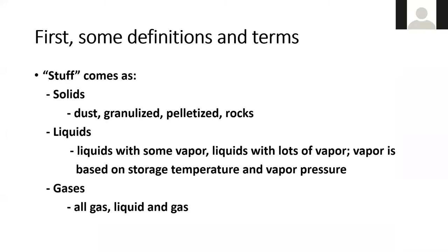Just some discussion stuff. To get started, stuff is what we store in tanks. I break it down as solids — could be dust, granulized, pelletized, rocks, a variety of things — what is coal, what is wheat. The second grouping is liquids, which deal with vapors as well as liquids that are all vapor, based on storage temperature and vapor pressure. And then gases — lots of different kinds that fall into these categories.